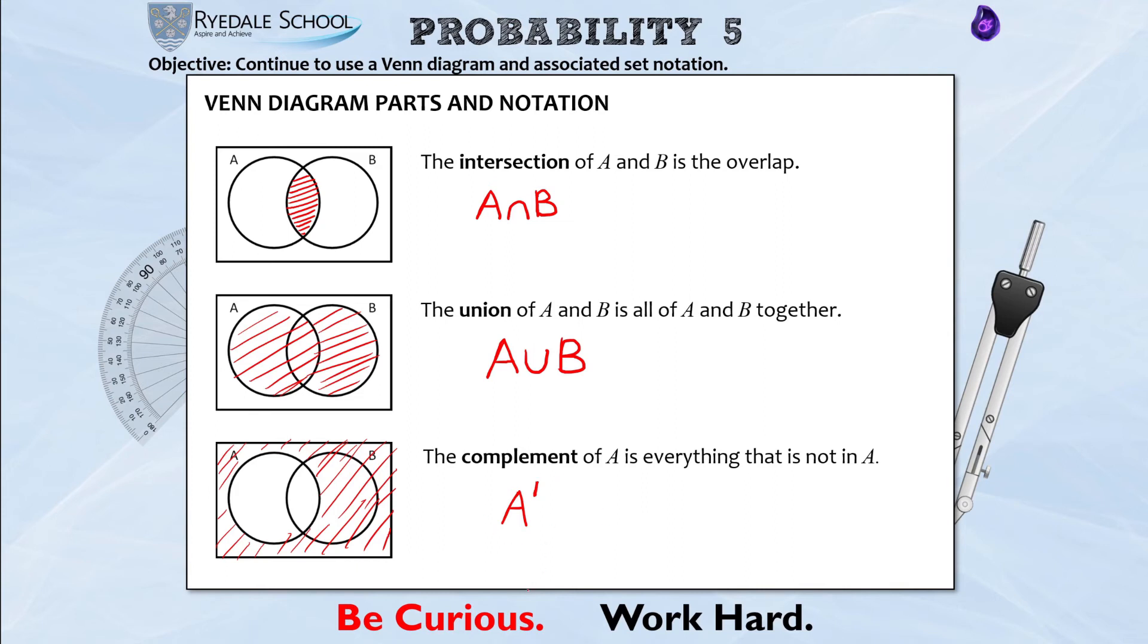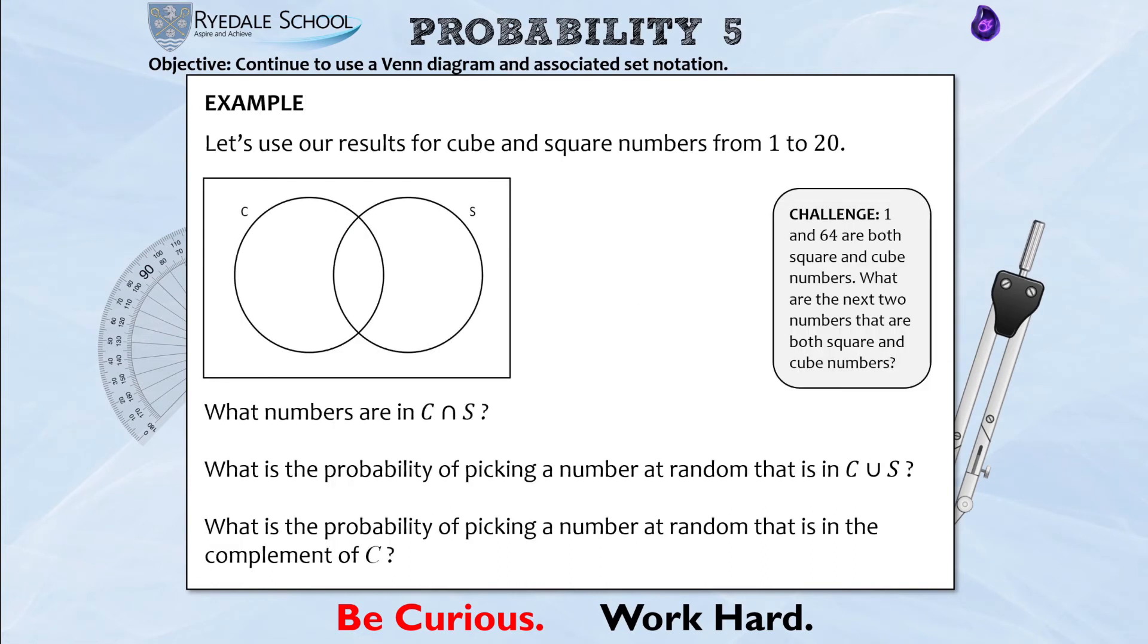So let's put our two things together, our set notation and our Venn diagrams, and see how this can work in a question. So we're going to use our results for what we did earlier on with the cube and the square numbers from 1 to 20, and we're going to populate the Venn diagram. Okay, this is a little bit different from how we were populating Venn diagrams last lesson because we were just putting the total numbers into the Venn diagram. This time I'm going to represent every individual piece of data.